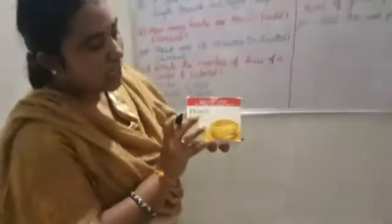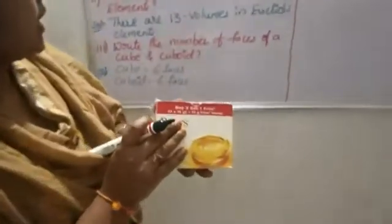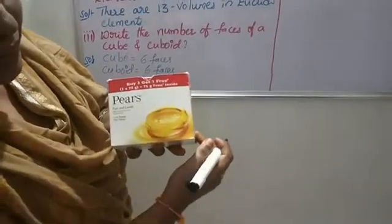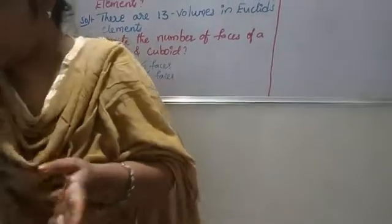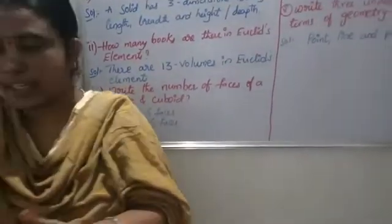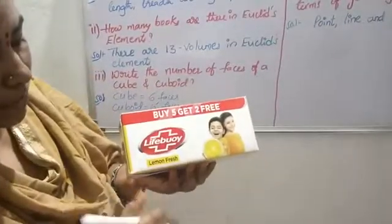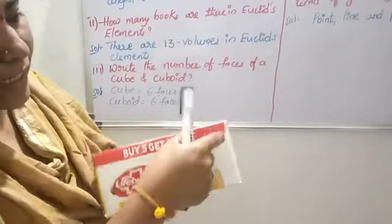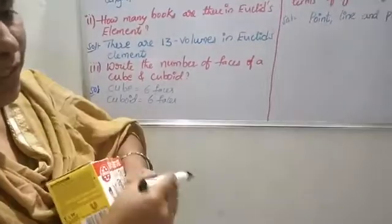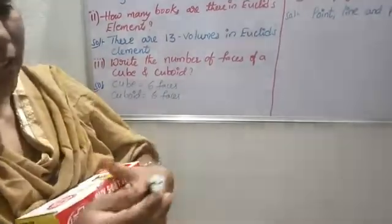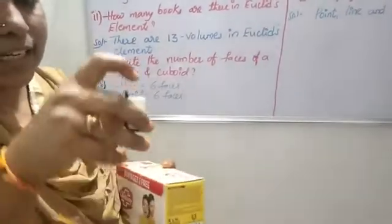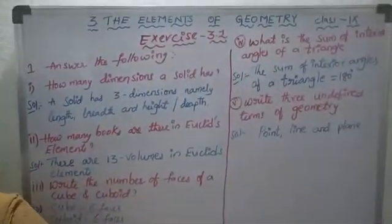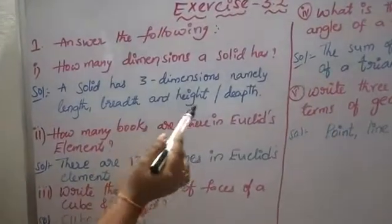For example, for a given solid, how many dimensions do we have? Length, breadth, and height. Observing another solid — it also has 3 dimensions: length, breadth, and height, sometimes called length, breadth, and depth. So any solid has 3 dimensions: length, breadth, and height or depth.